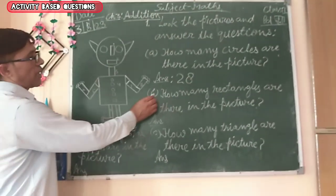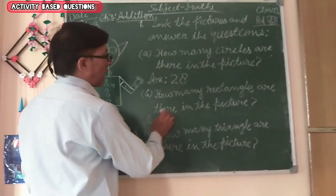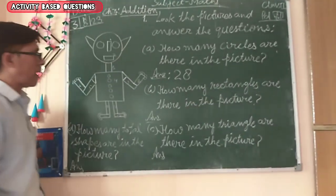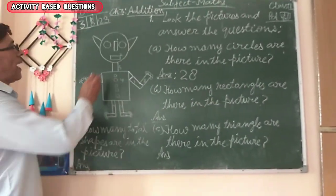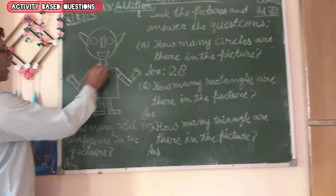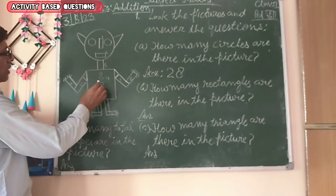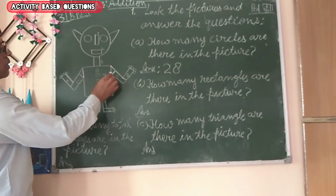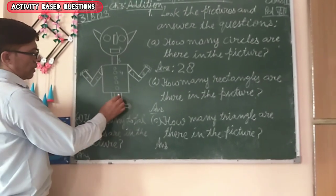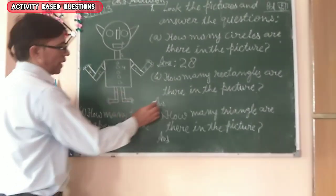Question number B. How many rectangles are there in the picture? 1, 2, 3, 4, 5, 6, 7, 8, 9, 10, 11, 12.